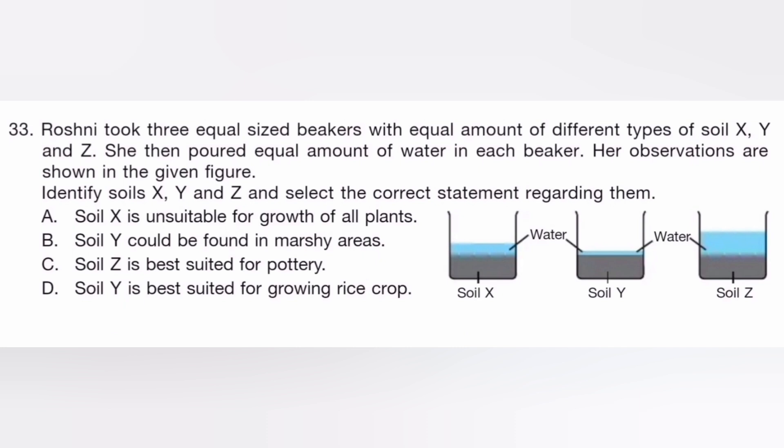Roshni took three equal-sized beakers with equal amounts of different types of soil X, Y, and Z. She then poured equal amounts of water in each beaker. Her observation was shown in the given figure. Identify soil X, Y, and Z and select the correct statement regarding them. The answer is C, soil Z is the best suited for pottery.